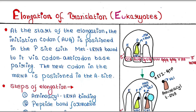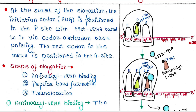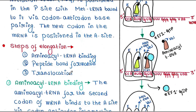Now the next codon in the mRNA is GUG, which is placed in the A site. Let's talk about the steps of elongation. There are mainly three steps: aminoacyl tRNA binding, peptide bond formation, and translocation.